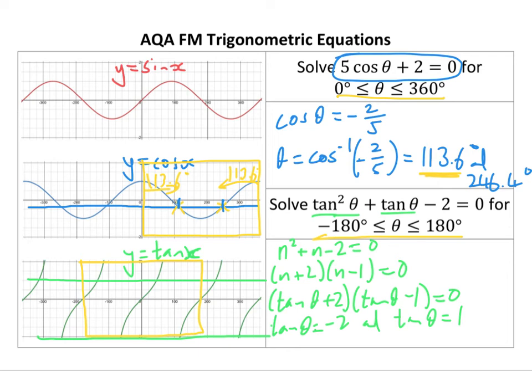And that means that I should get, for this one, for minus 2, I should get minus 63.4. So theta equals minus 63.4, and 116.6.